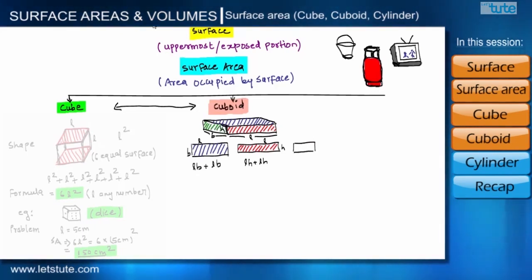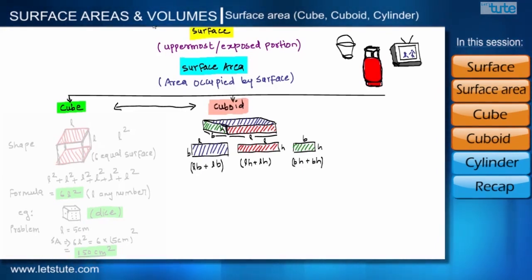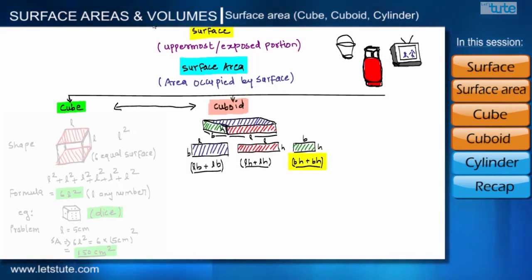Now let us find the area of the left surface. The left surface has sides B and H, so its area is B × H. Since we have two surfaces — left and right — we add another BH. We have now found the total surface area of the cuboid: top and bottom give LB + LB, front and back give LH + LH, and left and right give BH + BH.